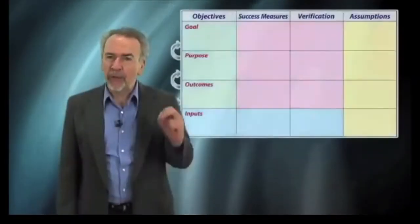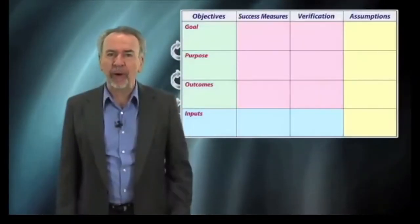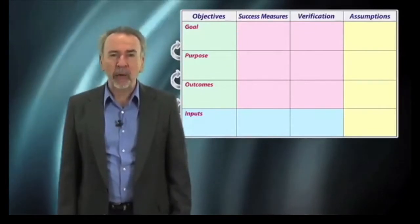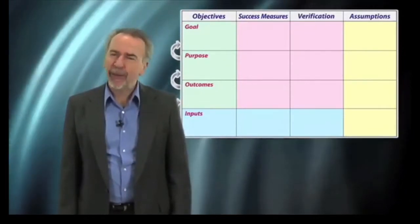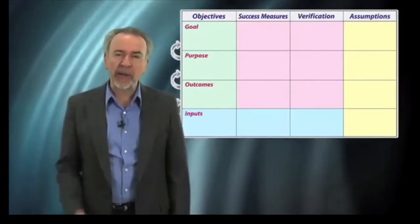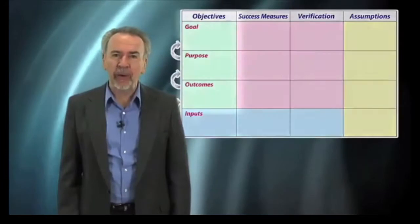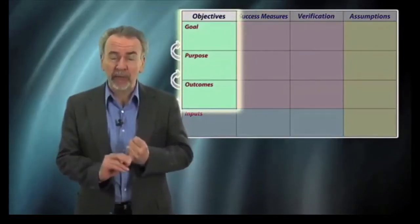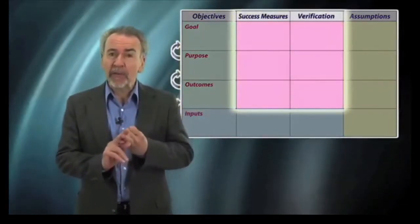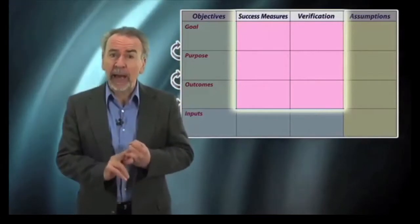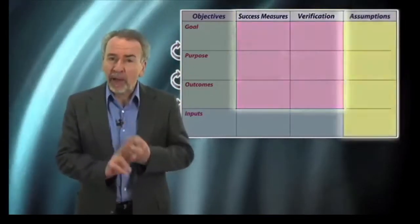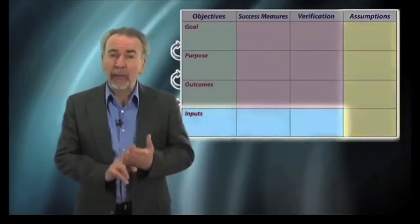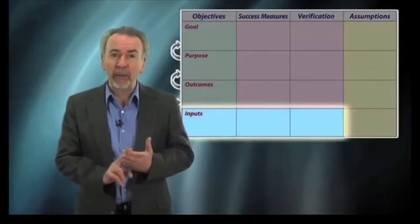We'll use a planning tool called the logical framework. It may seem complicated at first, but it's actually quite simple and logical. It's based on four questions which help us to define and align the various project objectives, identify measures of success and how we're going to verify, spot the risks and assumptions, and develop a more complete action plan.